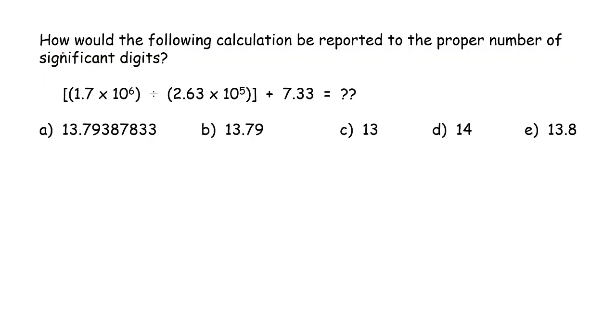How would the following calculation be reported to the proper number of significant digits? Let's look at this operation here.